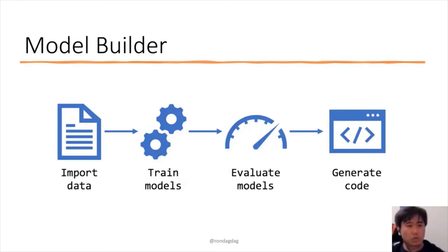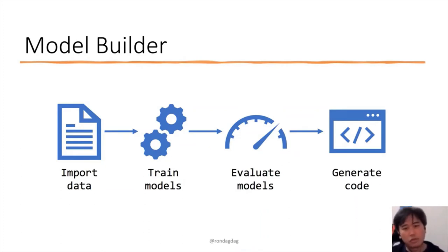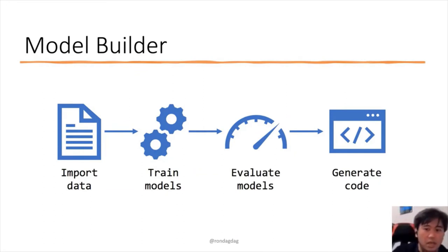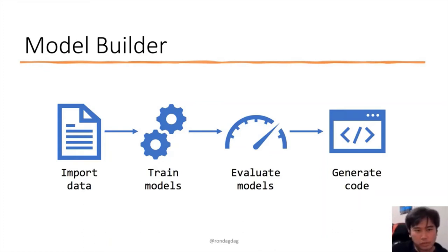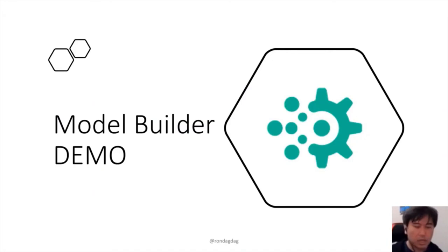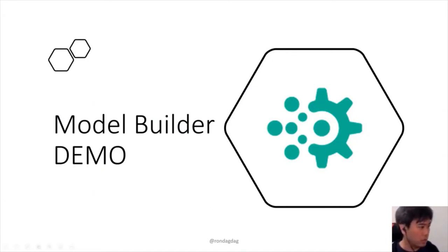The main flow is: you import the data — which can come from a SQL Server or CSV file — you use it to train the model, then you evaluate how good it is, and then you generate code to incorporate it into your application.